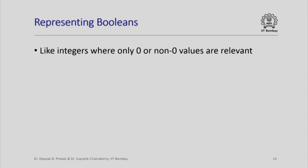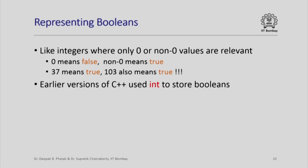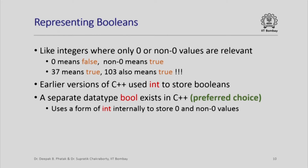How do we represent Booleans inside a computer? Booleans are just like integers where we are only interested in whether they have the value 0 or nonzero. If it has the value 0 we say the Boolean is false; if it has a nonzero value we say it is true — so 37 or 103 could both mean true. Earlier versions of C++ used int to store Booleans, but modern C++ implements a separate data type called bool, which internally uses a form of int to store 0 and nonzero values.